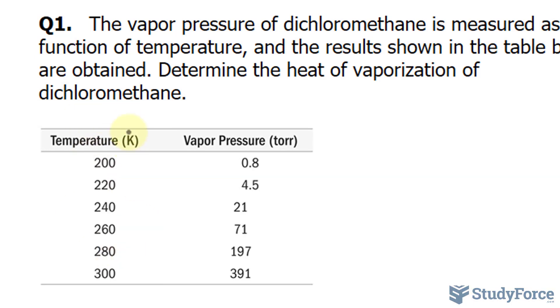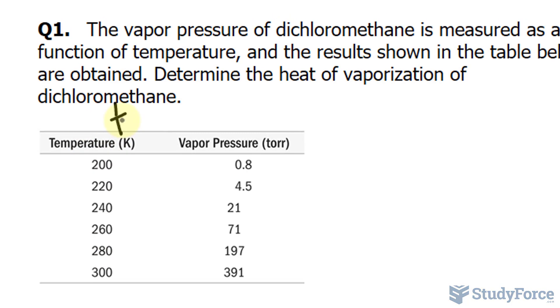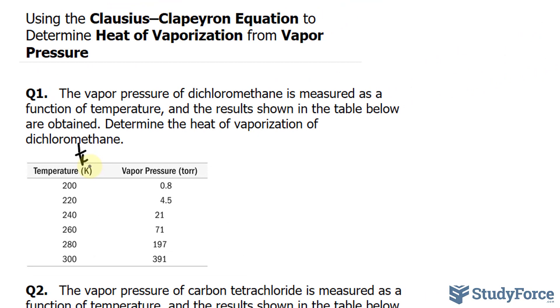On the x-axis, or the horizontal axis, we'll take the reciprocal of the temperature, so 1 over each of these numbers. That will serve as our x-coordinate. And for our y-coordinate, we'll take the ln of the pressure. In other words, the natural log of the pressure that we have.